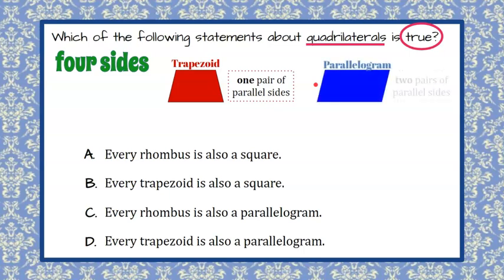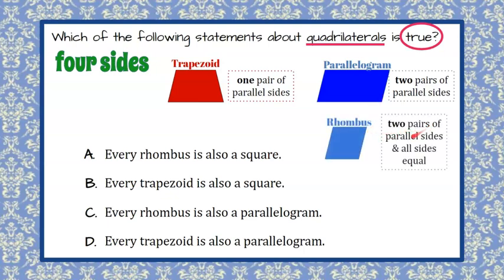Here we have a parallelogram, which has two pairs of parallel sides. So the opposite sides are parallel to each other. Then we are going to talk about a rhombus. Our rhombus has two pairs of parallel sides, and all of its sides are equal to each other.